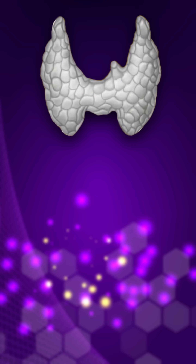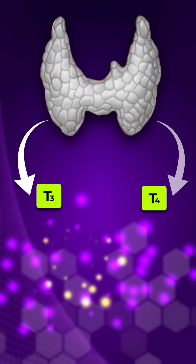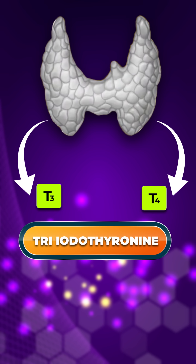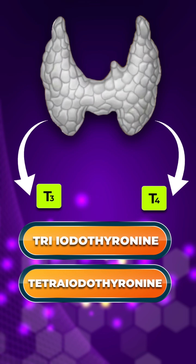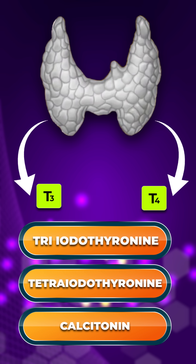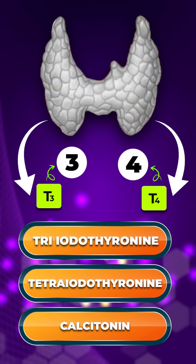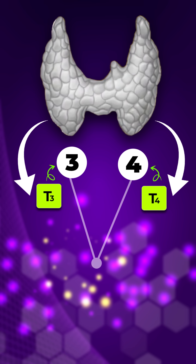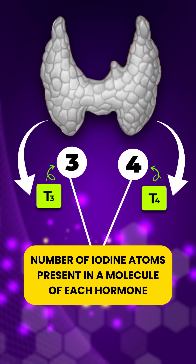The thyroid gland secretes two hormones, T3 and T4 — triiodothyronine and tetraiodothyronine. The numbers 3 and 4 indicate the number of iodine atoms in each hormone.